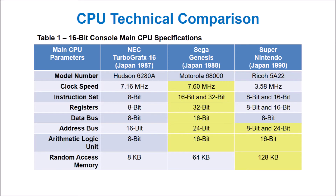For reference, I've highlighted the best-performing CPU parameters for each console in yellow. As you can see, the Sega Genesis appears to come first in most categories.